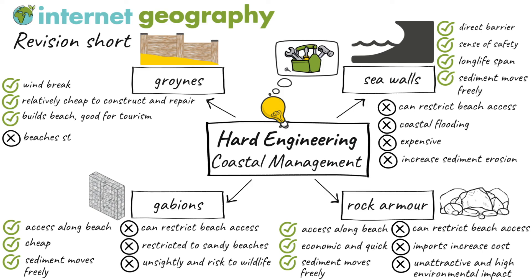There are a range of disadvantages of using groins to manage coastal erosion. Beaches downdrift to the defences are starved of beach material due to their impact on longshore drift. This leads to increased erosion, which has an economic impact further along the coast. Additionally, groins need regular maintenance.